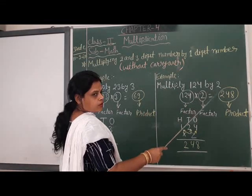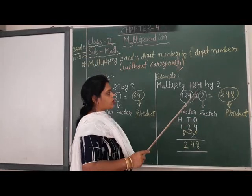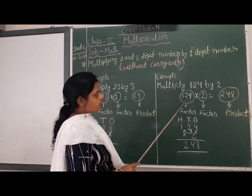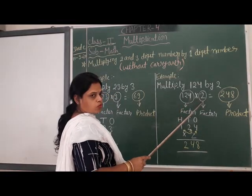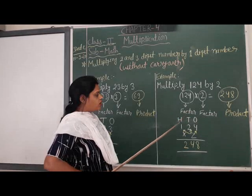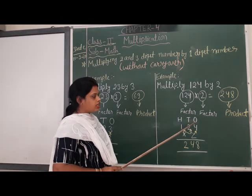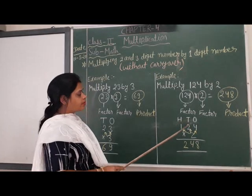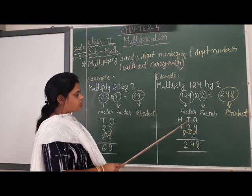Multiply 124 by 2. There are two factors 124 and 2. First of all we arrange the number in the forms of 1s, 10s and 100s.